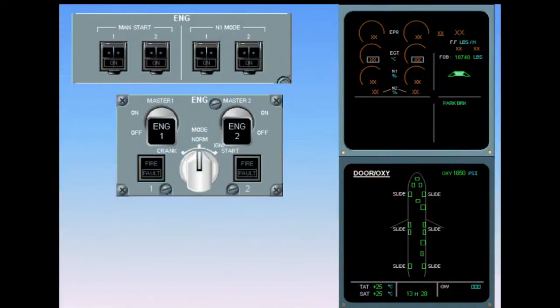The configuration is the same. On the engine warning display, all indications related to the engines are displayed in amber as long as the full authority digital engine controls are not powered. In order to start the engines, the engine mode selector must be switched to ignition start first.